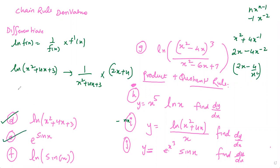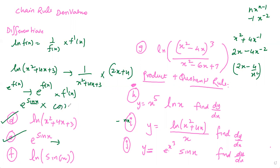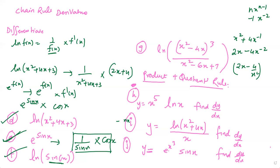For part e: the derivative of e to the power f(x) is e to the power f(x) times f'(x). So the derivative of e to the power sin(x) is e to the power sin(x) times cos(x). Now for ln(sin(x)): f(x) is sin(x), so it becomes 1 over sin(x) times f'(x), which is cos(x). So that's the derivative of ln(sin(x)).